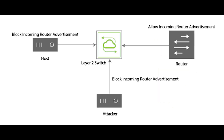To increase security, you can configure IPv6 router advertisement guard to protect the network against router advertisement messages generated by unauthorized routers trying to join the network. The IPv6 router advertisement guard feature provides support for allowing the network administrator to block or reject unwanted or rogue router advertisement messages arriving at the network device platform.